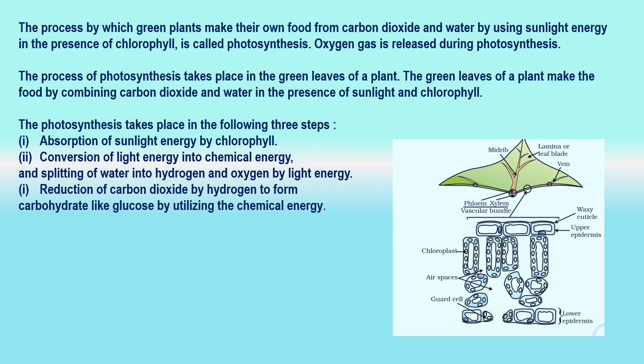The process by which green plants make their own food, like glucose, from carbon dioxide and water by using sunlight energy in the presence of chlorophyll is called photosynthesis. Oxygen gas is released during photosynthesis. The process takes place in the green leaves of a plant, which make food by combining carbon dioxide and water in the presence of sunlight and chlorophyll. The carbon dioxide required is taken from the air through tiny pores called stomata. Water is taken from the soil and transported to the leaves through the roots and stem. Sunlight provides the energy required for the chemical reactions involved.